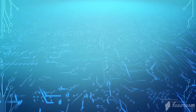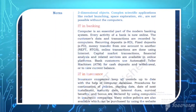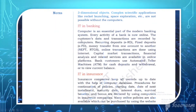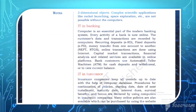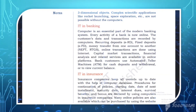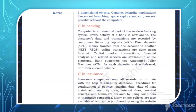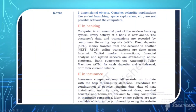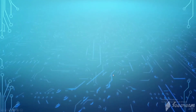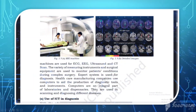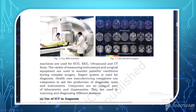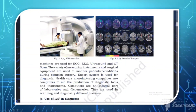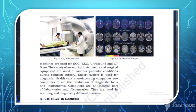Insurance companies keep all records up to date with the help of computer databases. These records include continuation of policy, starting date, date of next installment, maturity date, interest, dues, and survival benefit. Bonuses are declared using computers by insurance companies. Many online policies are also available which can be purchased using the website.